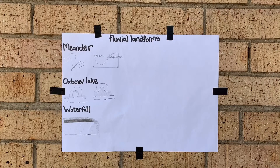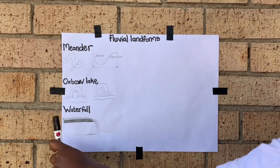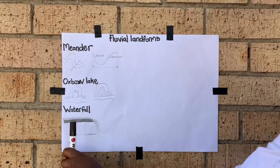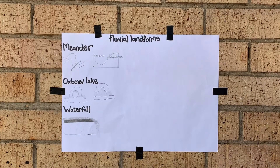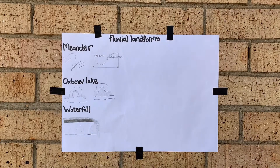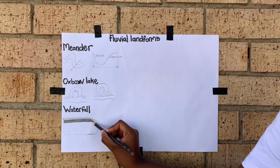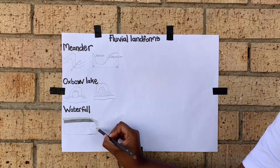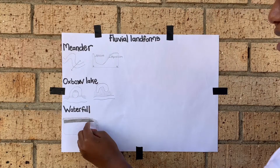The next one is a waterfall. A waterfall is a result of hard rock overlying softer, less resistant rock — I've colored the harder rock darker to show that. The water flows over it, and because the underlying rock is less resistant, over the years it erodes backwards as the water constantly erodes the softer rock.